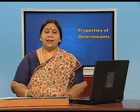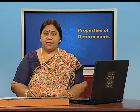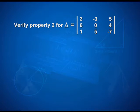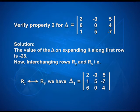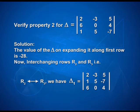Now students, let us solve another question to verify the second property of determinants. Let us take the determinant with rows [2, -3, 5], [6, 0, 4], [1, 5, -7]. The value of the determinant on expanding along the first row is -28, as done in the last example. Now, interchanging rows R2 and R3, we have determinant 1 with rows [2, -3, 5], [1, 5, -7], [6, 0, 4]. We have interchanged the second row and third row.